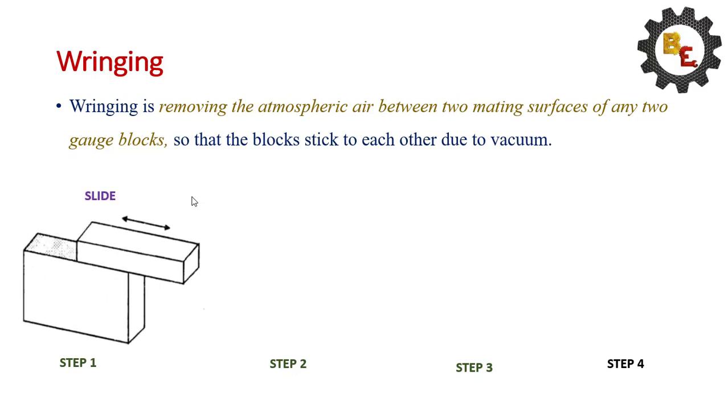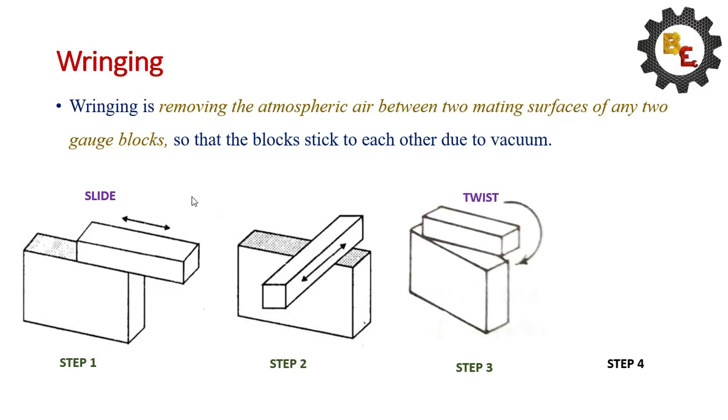The following four steps will show the wringing. First, we have to slide one over another. Step 2, then we have to twist up to the parallel line. We have to twist, then finally, both gauges will match together.